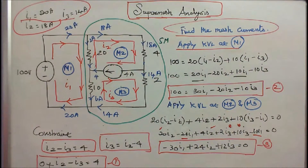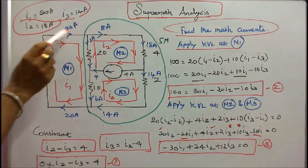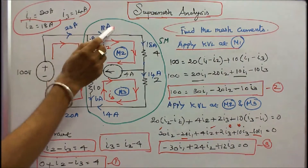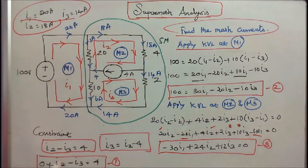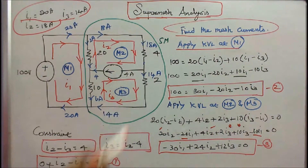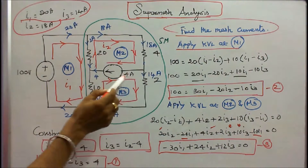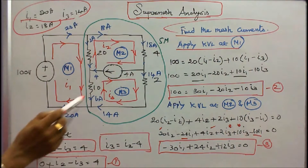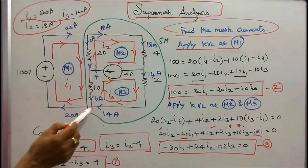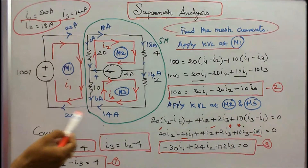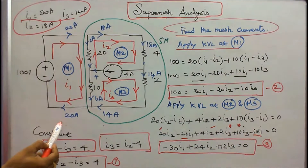Now I apply Kirchhoff's current law to verify. I1 is equal to 20, I2 is equal to 18, therefore current flow in the 20 ohm resistor is 20 minus 18 equals 2 amps. Current flow in the 4 ohm resistor is 18 amps, in the 2 ohm resistor is 14 amps, and 18 minus 14 equals 4 amps. Current flow in the 10 ohm resistor is 2 plus 4 equals 6 amps. Current towards the junction is 14 plus 6 equals 20, and current leaving the junction is 20. Kirchhoff's current law is verified.